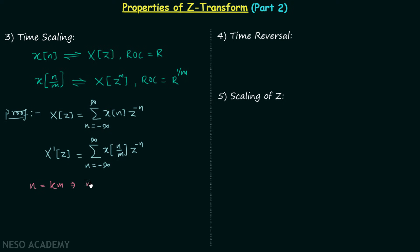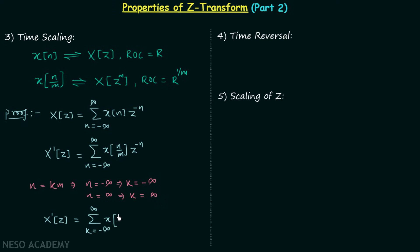This implies when n = -∞, k = -∞, and when n = ∞, k = ∞. Making these substitutions, X'(z) becomes the summation from k = -∞ to +∞ of X(km) multiplied by Z^(-km). We then write Z^(-km) as (Z^m)^(-k).